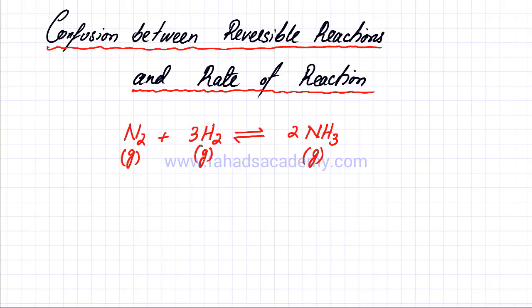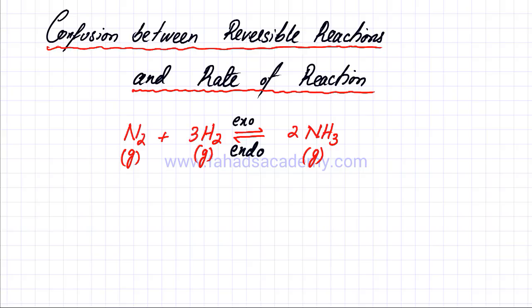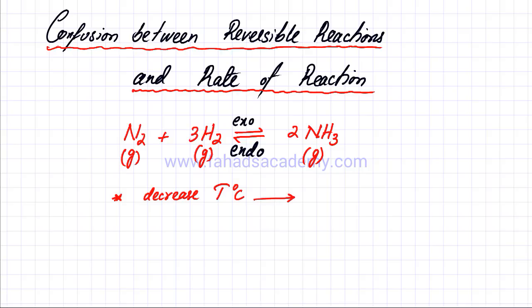The enthalpy change for the forward reaction is exothermic, which means the reverse reaction would be endothermic. This is a reversible reaction at equilibrium, and let's say I decrease temperature. According to Le Chatelier's principle, if I decrease temperature, the equilibrium is going to try to increase temperature, and the way it can do that is by favoring the exothermic reaction.